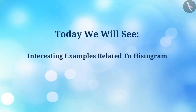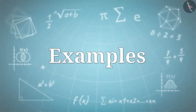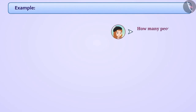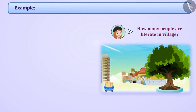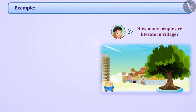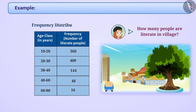We'll see some interesting examples related to histograms. Vinita had to know how many people are literate in her village. To find out, Vinita conducted a survey in the village. The information obtained from the survey was presented in the frequency distribution table shown below.